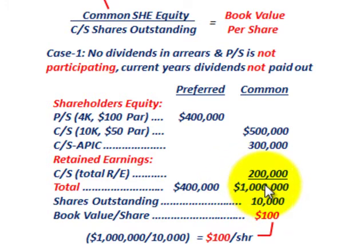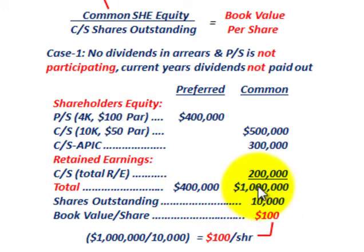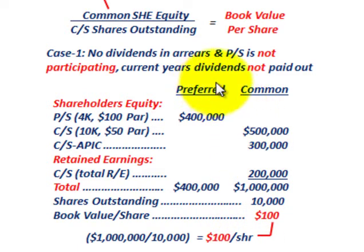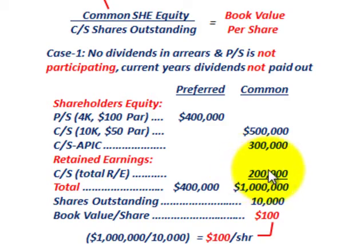Totaling up: preferred stock has $400,000 and common stock has a total shareholders' equity of $1,000,000. The book value per share is easy to calculate: 10,000 shares outstanding divided into $1,000,000 gives a book value per share of $100. In this first case, preferred stock had little or no effect on common stock's equity and retained earnings.